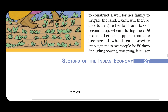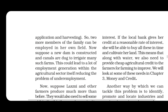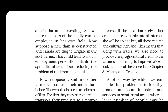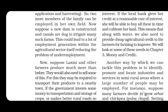Suppose that one hectare of wheat can provide employment to two people for 15 days, including sowing, watering, and applying fertilizers. This means two more members of the family can be employed in her own field.